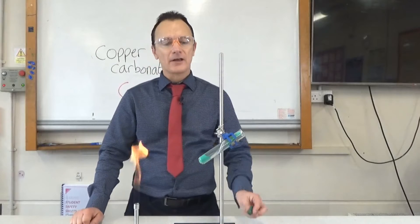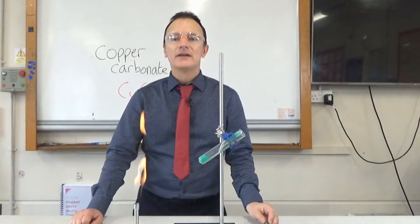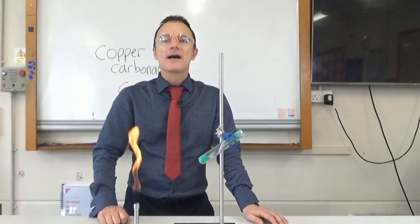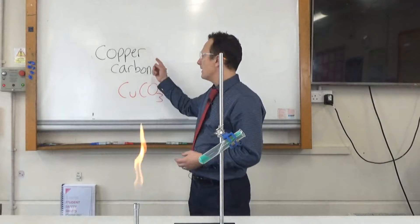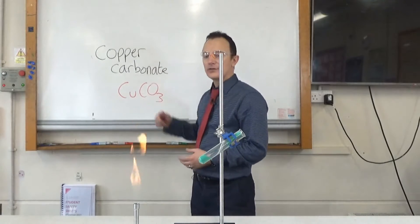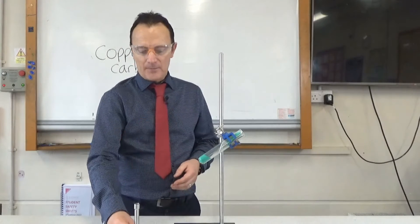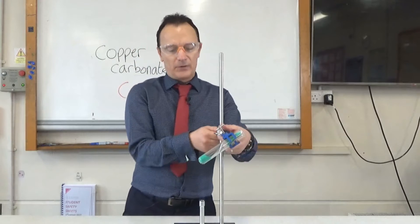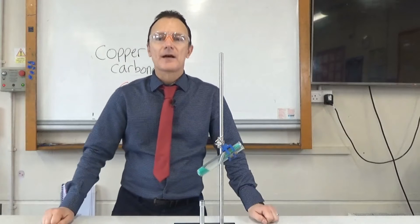So the first stage in getting the copper out of this green rock which is called malachite is to crush up the rock and you get a green powder and that green powder is copper carbonate. So at this stage the copper is joined to carbon and oxygen atoms and we're going to start that chemical extraction by heating the copper carbonate very strongly with a Bunsen burner. So we'll come back to this in a few minutes and see what's happened to it.